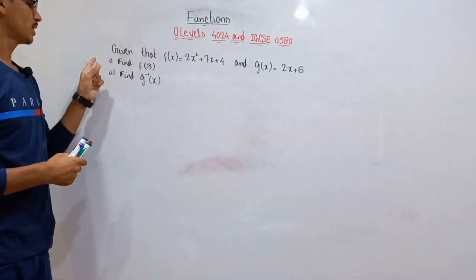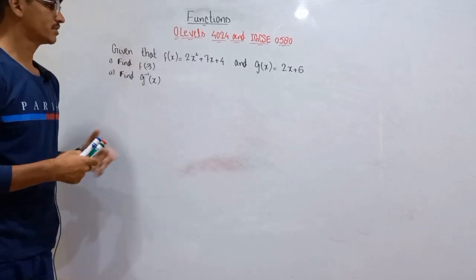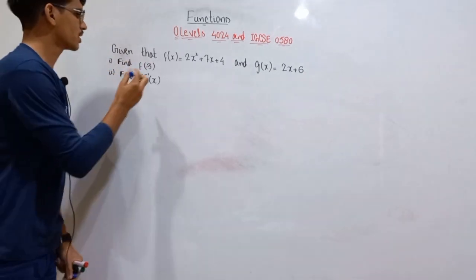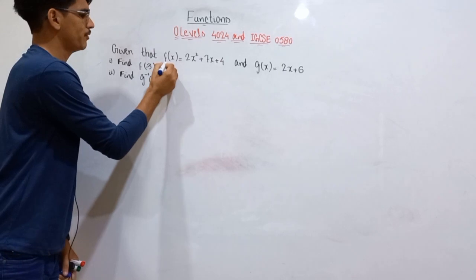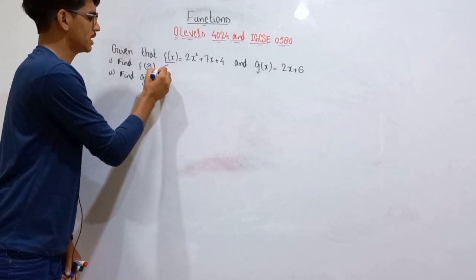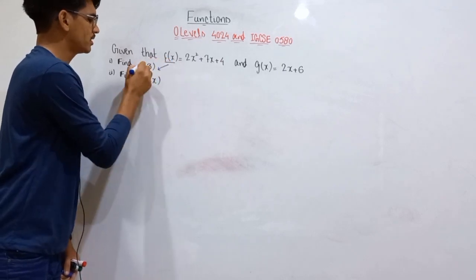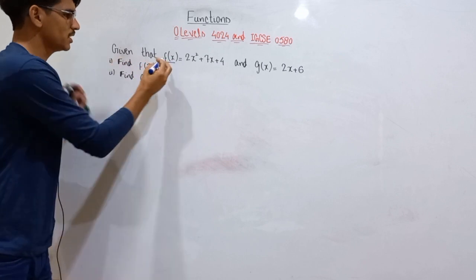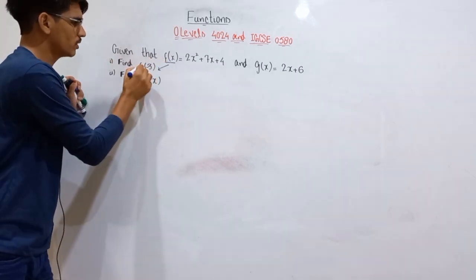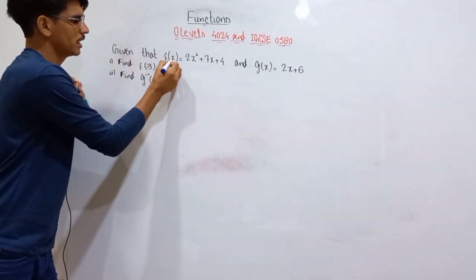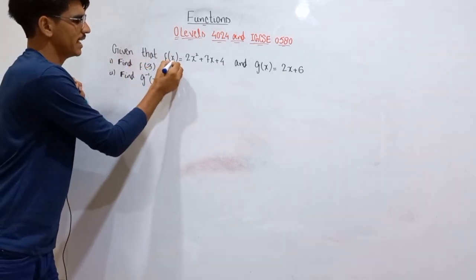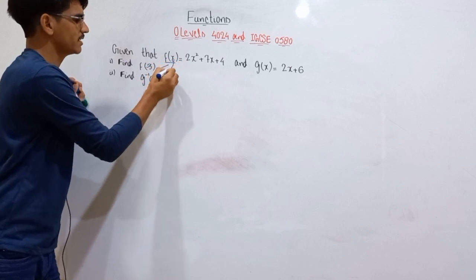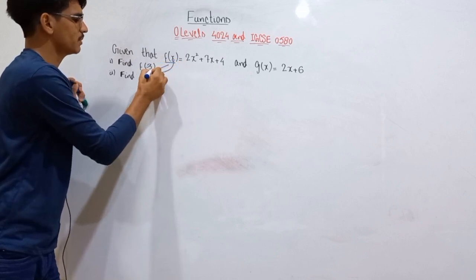First of all we have to find out the value of f(-3). Let's compare f(x) with f(-3). Since f is equal to f, this means the function equals the function — so x is representing -3 in this case.